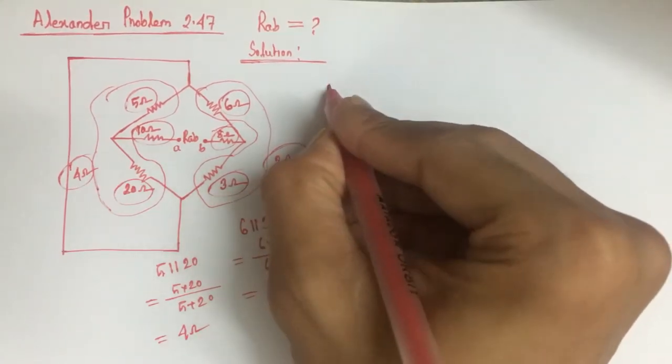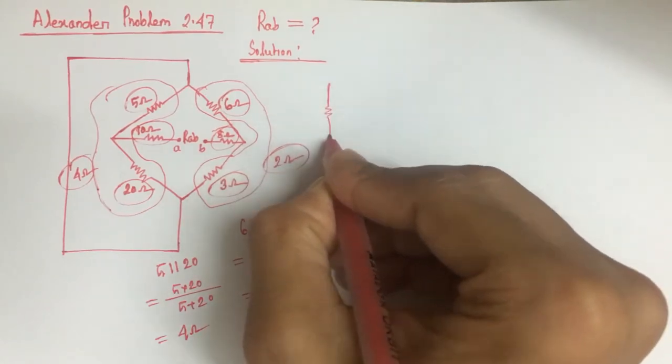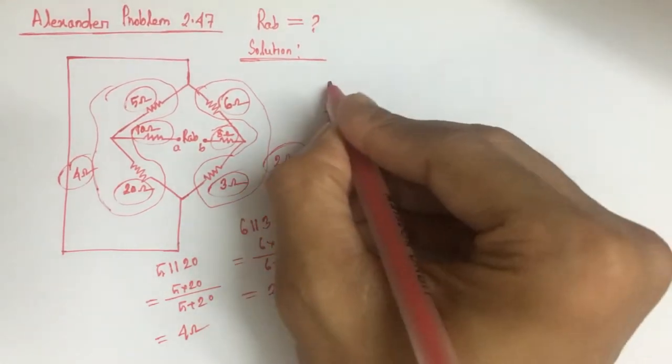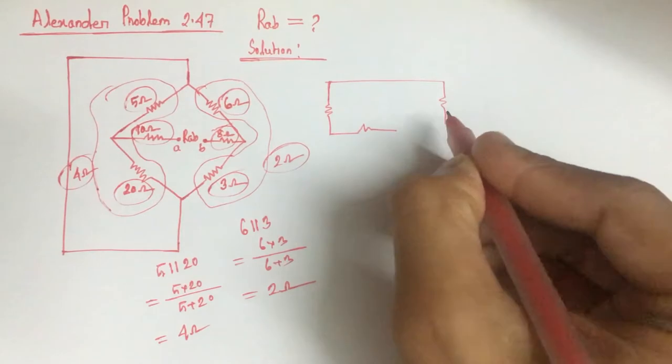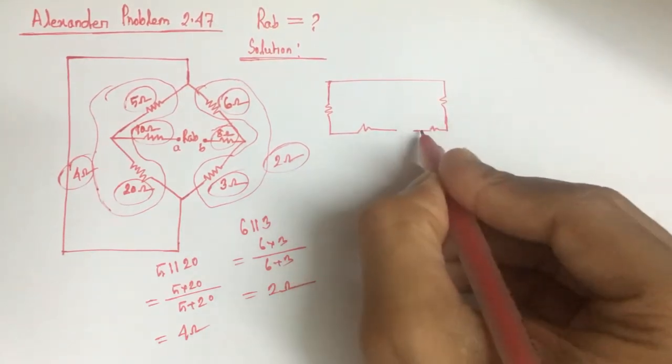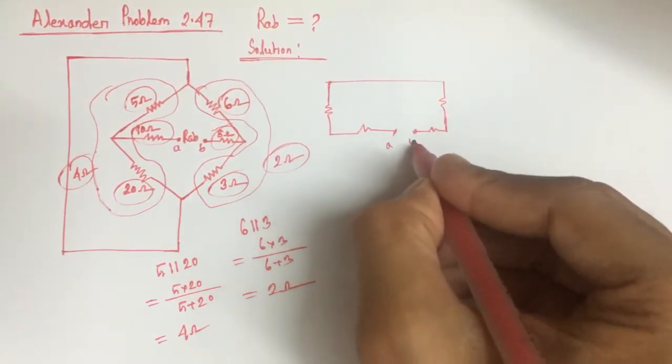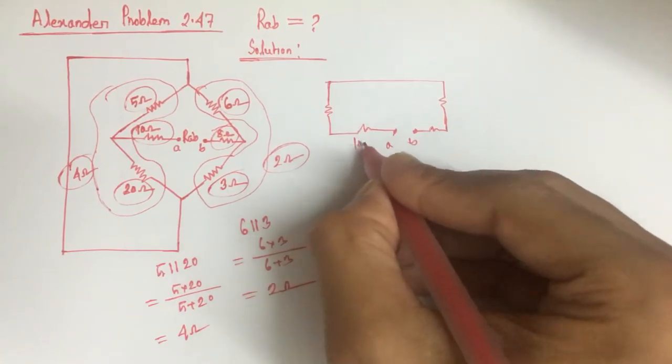we will get this point A, this is B, and this is 10 ohm,